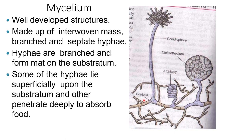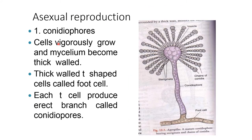The mycelium is a well-developed structure made up of an interwoven mass of branched and septate hyphae. Some hyphae lie superficially on the substratum and others penetrate deeply to absorb food. Reproduction can be both asexual and sexual. In the case of asexual reproduction, it is due to conidiophores.